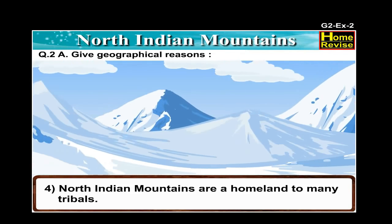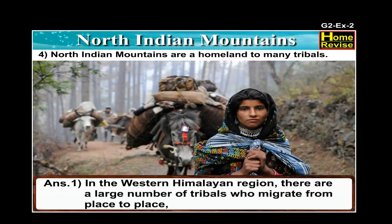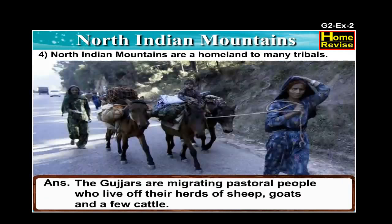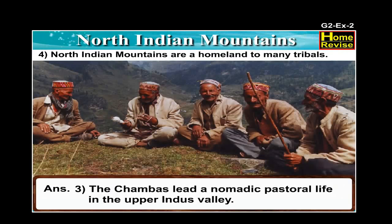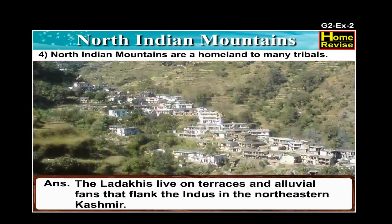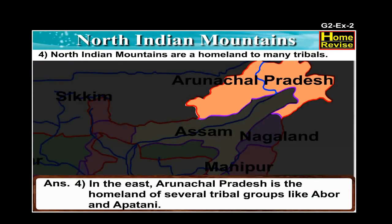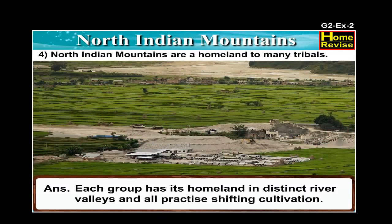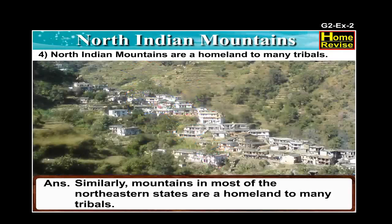Number four: North Indian mountains are a homeland to many tribals. In the western Himalayas, there are a large number of tribals who migrate from place to place. The Gaddi tribals possess large herds of sheep and goats. The Gujars are migrating pastoral people who live off their herds of sheep, goat and cattle. The Chambas lead a nomadic pastoral life in the upper Indus valley. The Ladakhis live on terraces and alluvial fans flanking the Indus in northeastern Kashmir. In Arunachal Pradesh, tribal groups like Abhor and Appatani practice shifting cultivation. Mountains in most northeastern states are a homeland to many tribals.